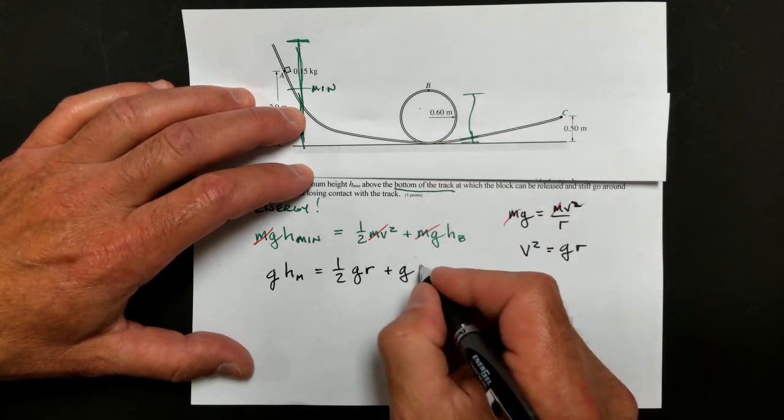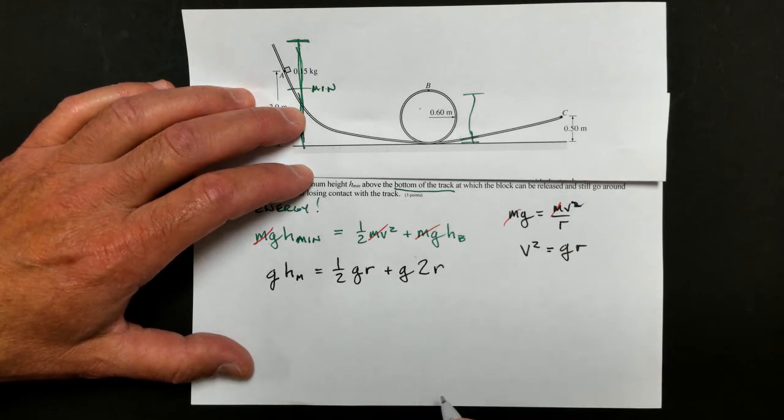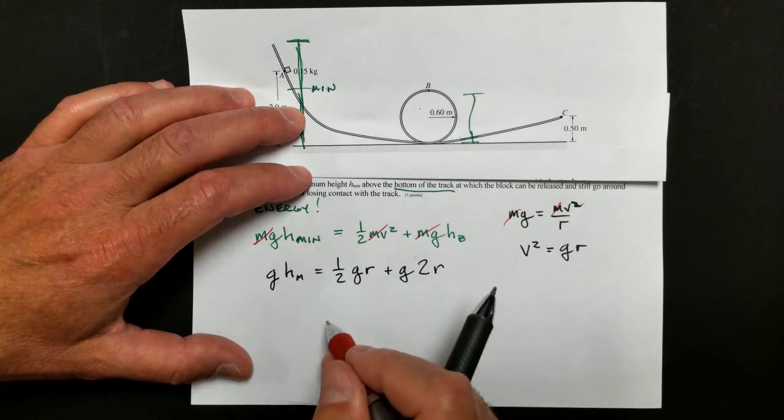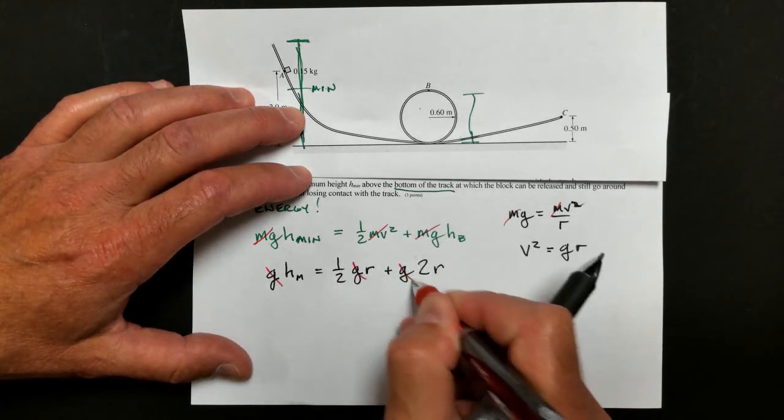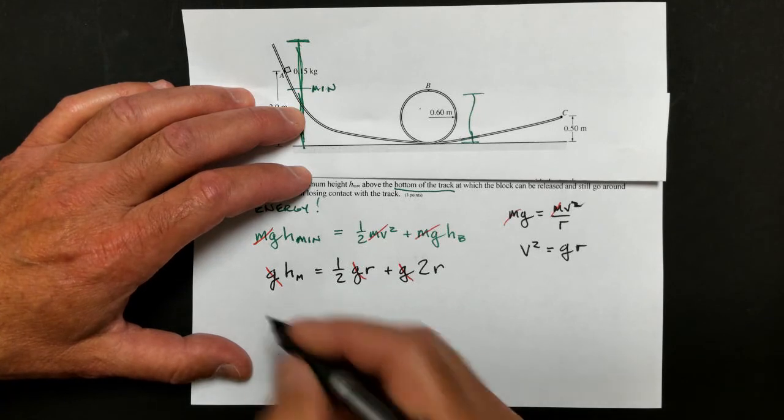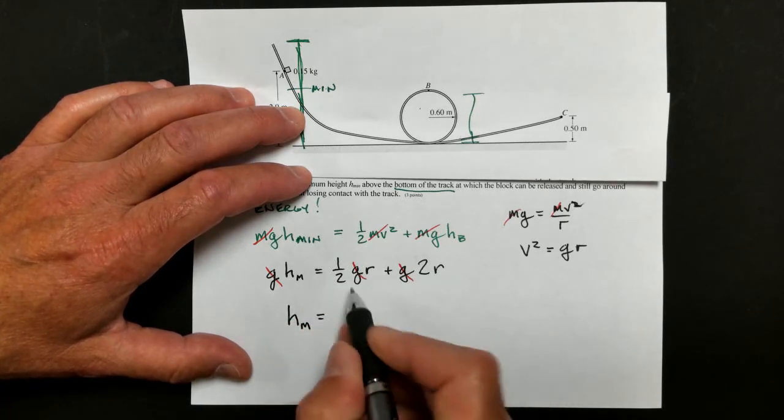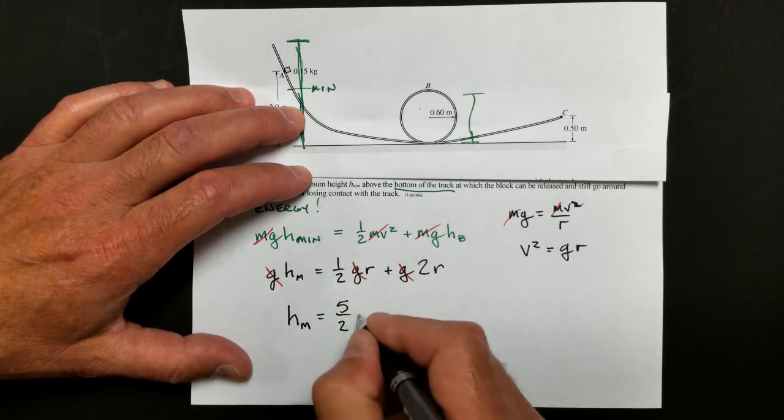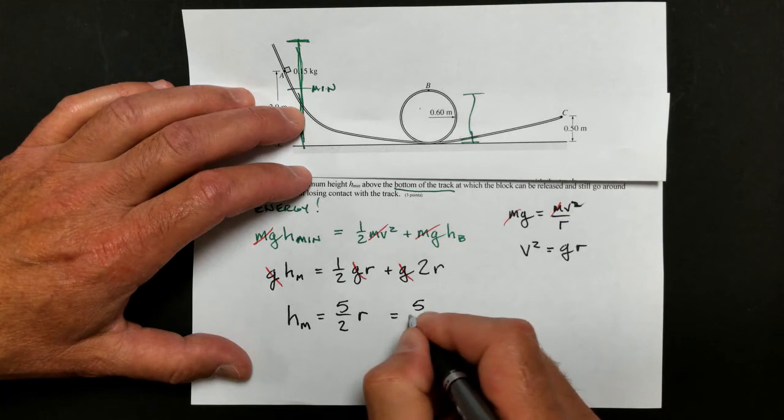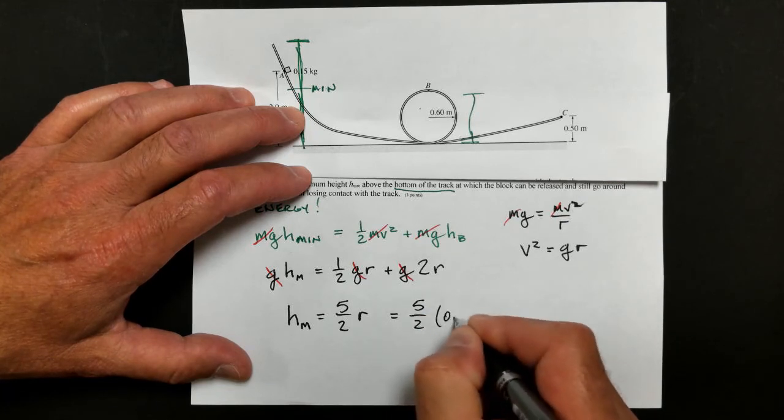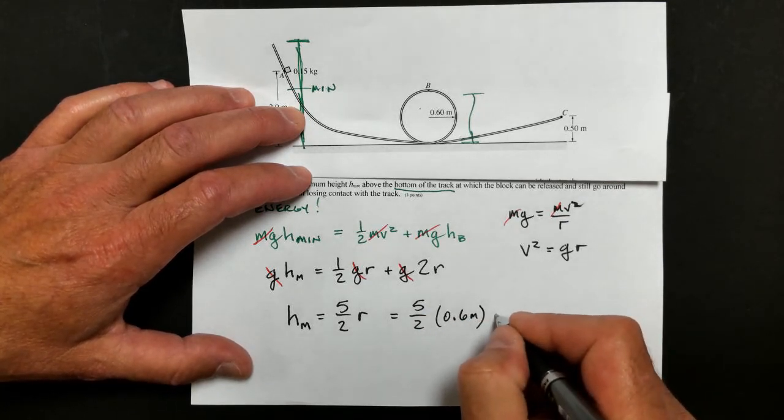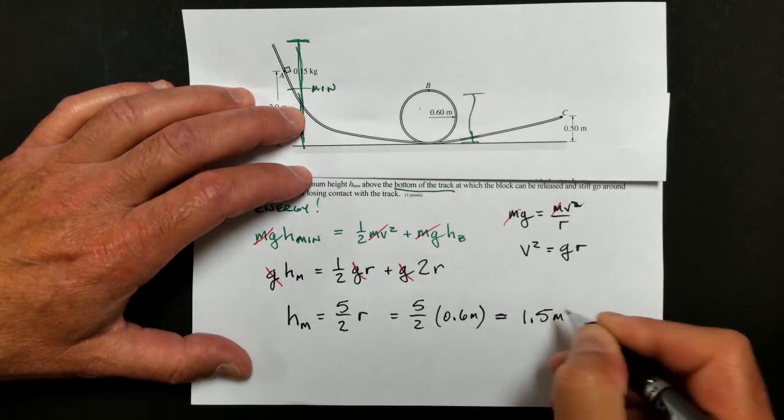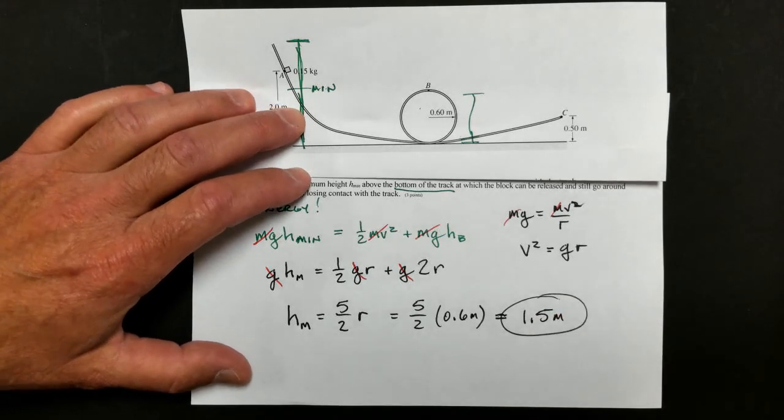Okay. Now, interestingly, we don't often say this, but everybody brought g to the party. And you can see now we have an expression for the minimum height is just equal to 2R plus one half R, which is 5 halves times R. And if we plug and chug, we get 5 halves times 0.6 meters of radius. And we end up with exactly 1.5 meters is our minimum height.